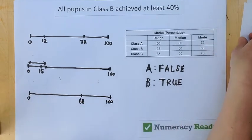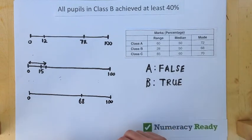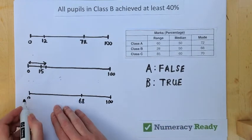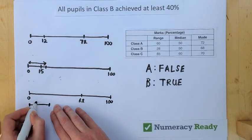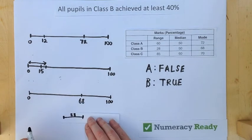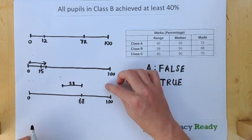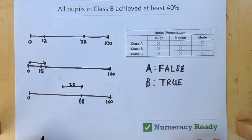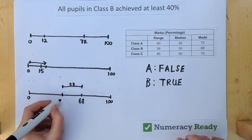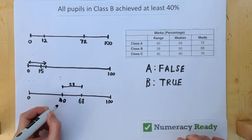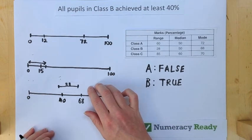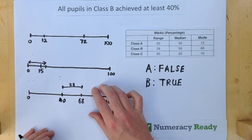And apply our range, which is quite small for Class B, it's only 28. Then we can see that again, similarly to Statement A, the lowest anyone could have scored is 40. Any lower and our range wouldn't include that 68.